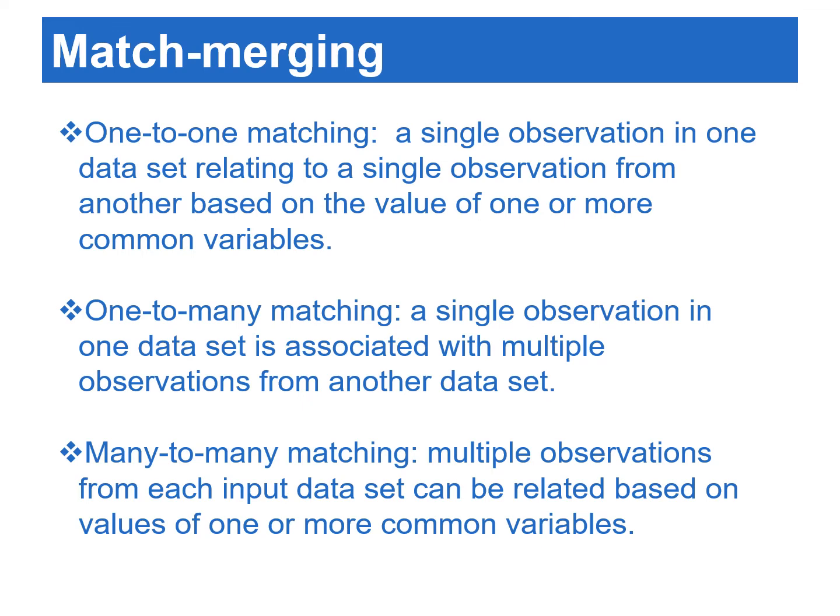One-to-one matching refers to a single observation in one data set relating to a single observation from another based on the value of one or more common variables. One-to-many matching means a single observation in one data set is associated with multiple observations from another. Many-to-many matching refers to multiple observations from each input data set being related based on values of one or more common variables. Note that the merge statement does not produce a Cartesian product on a many-to-many match merge.